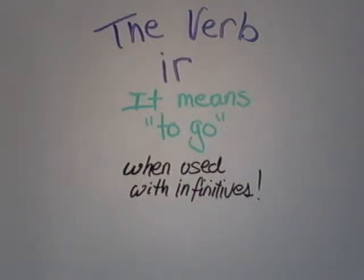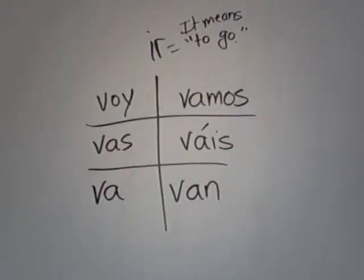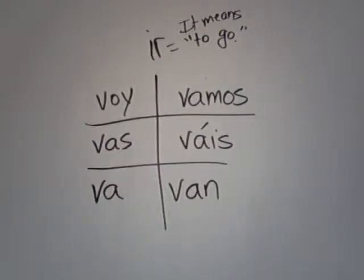The verb IR. It means to go. When used with an infinitive, you've already seen the video on the verb IR with all of its parts of speech. You know that it's an irregular verb, not to be confused with IR verbs. IR means to go.